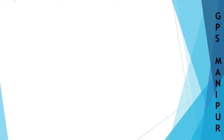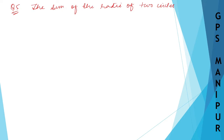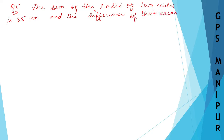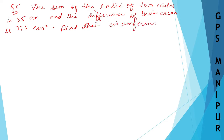We are doing exercise point one, question number five. The question: the sum of the radii of two circles is 35 centimeters, and the difference of their areas is 770 centimeters squared. Find their circumference.